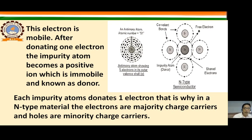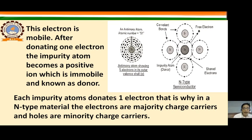The donor atom is immobile and positively charged. One free electron is released and is free to move. Each impurity atom donates one electron — that is why in n-type material electrons are the majority charge carriers and holes are the minority charge carriers.